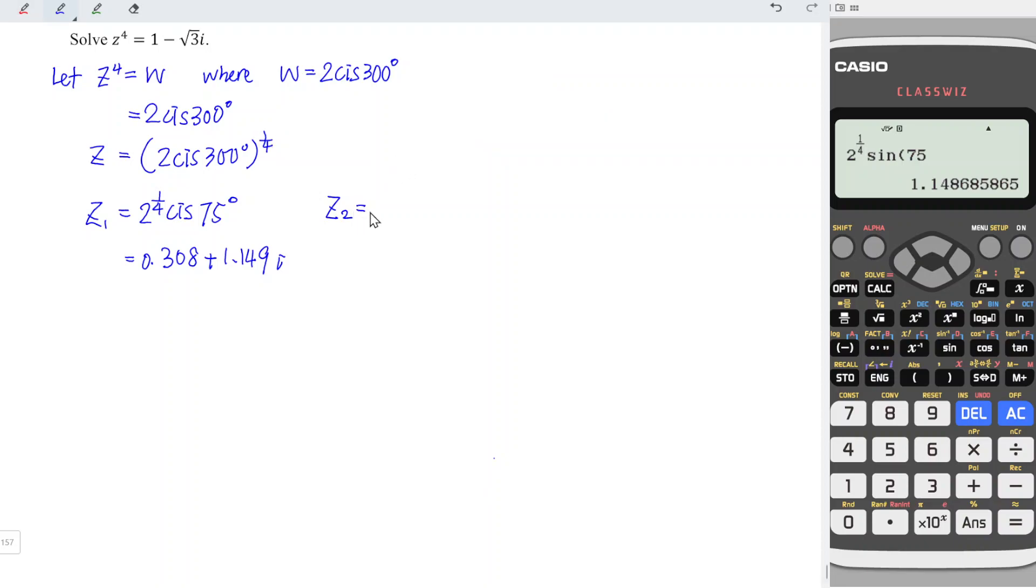Therefore, the second root should be equal to 2 to the power of 1 over 4 cis, and the angle should be 75 plus 90, which is equal to 165. By using the same idea, we can obtain the rectangular form. Move back to the previous entered value, change 75 to 165, and we obtain negative 1.149, rounded to the nearest 3 decimal places. Let's change cos to sin, and we should obtain positive 0.308i.